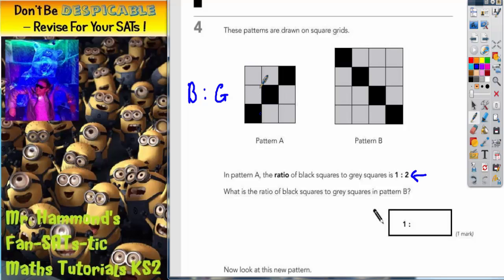But if we actually count the black and grey squares in pattern A, we've got 3 black squares: 1, 2, 3. And we've got 1, 2, 3, 4, 5, 6 grey squares. So it actually looks as though the ratio is 3 to 6. So where are they getting 1 to 2 from?